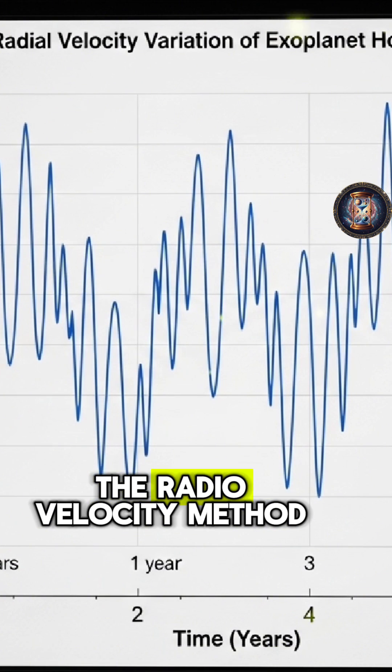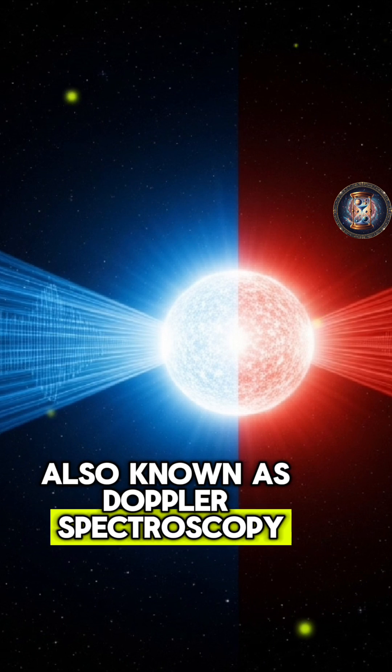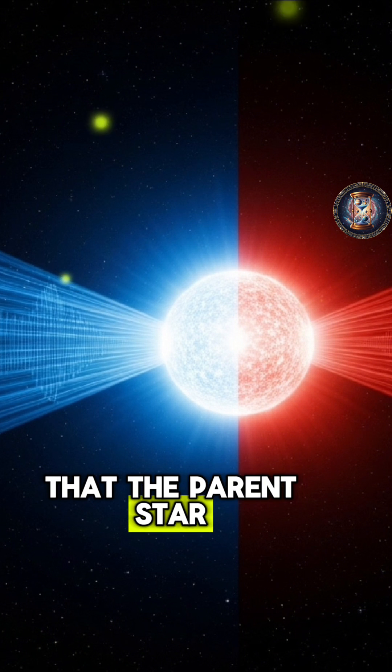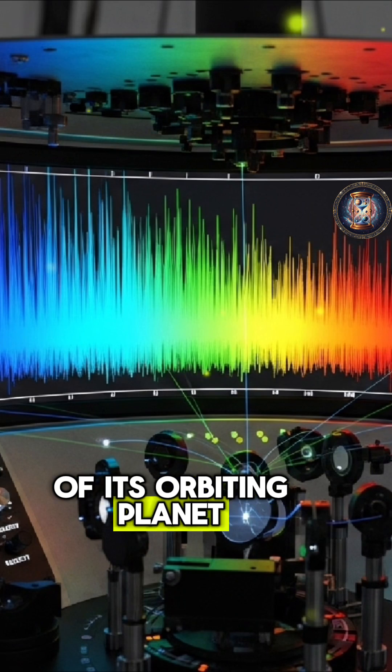The radial velocity method, also known as Doppler spectroscopy, works on the principle that the parent star is tugged by the gravitational pull of its orbiting planet.